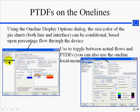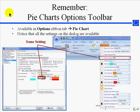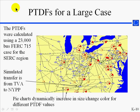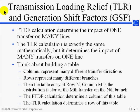You can also go to the pie chart option category inside the one-line display options to select that PTDFs be used in the pie charts. The options ribbon tab also has a quick way to access the pie chart options and also the animated flow options. This slide shows PTDFs on a one-line diagram for a large case. The pie charts show the PTDFs on the tie lines between different areas, and are also formatted to change size dynamically for different PTDF values.